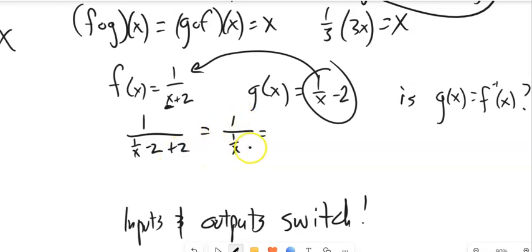minus 2 plus 2 is 0. So I have 1 over 1 over x. I have a fraction divided by a fraction. I have 1 divided by 1 over x, which is 1 times x over 1, which is x. So it checks out that way.